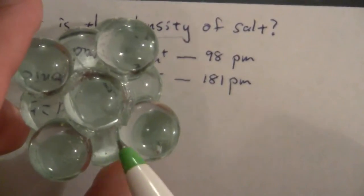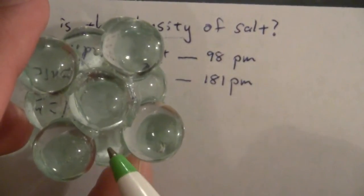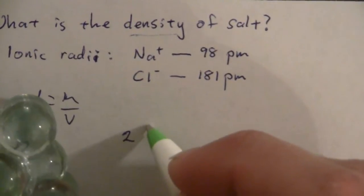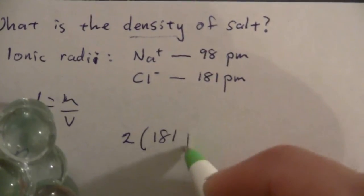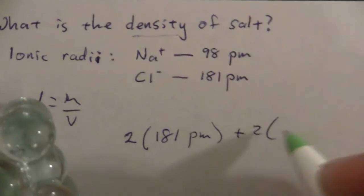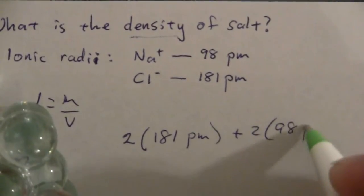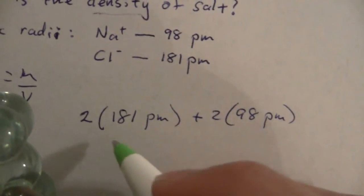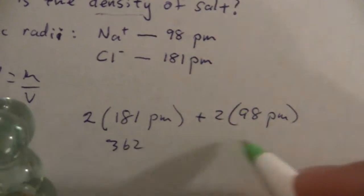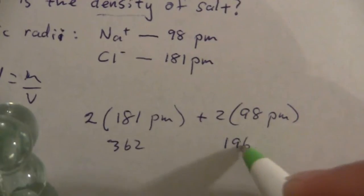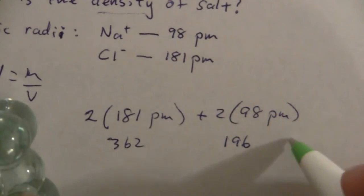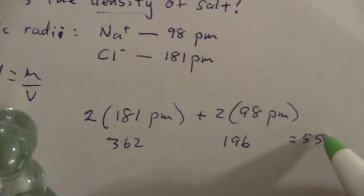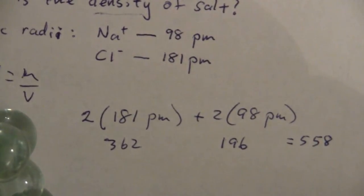and then the sodium atom also two of its radii there. So we'll have two times 181 picometers plus two times 98 picometers. This will be 362, and this is 196. So if you add these together, you get 558.